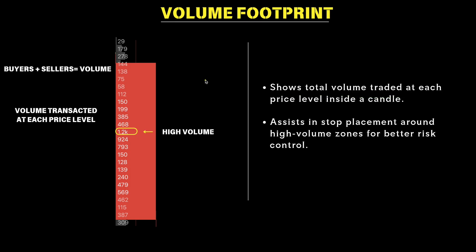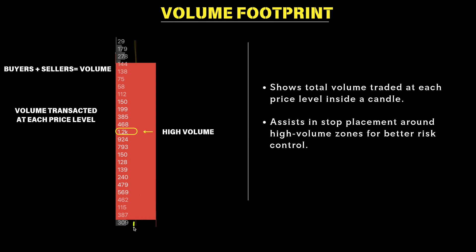Looking at this volume footprint right off the bat, you can see that we get the same exact information like we would on a regular candlestick. We have the body of the candle like we normally would, the top of the wick, and the bottom of the wick. Now we have to ask ourselves, what is volume? Buying and selling is going to equate to all of the volume in the market. All of the aggressive buy orders summed up with all of the aggressive sell orders is going to equal the volume.